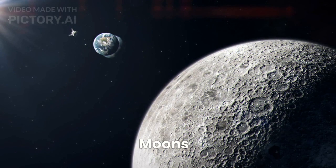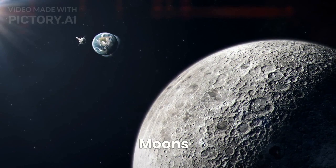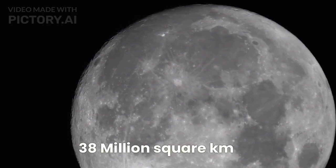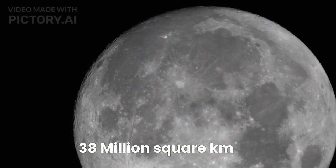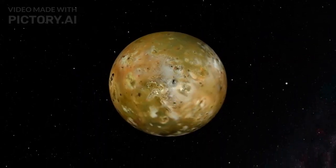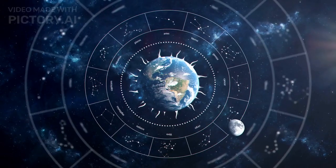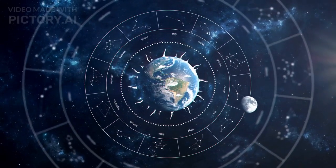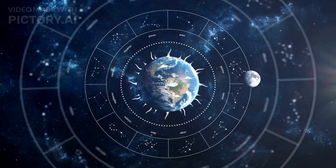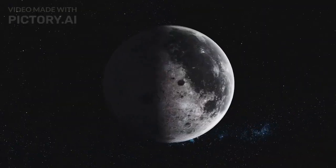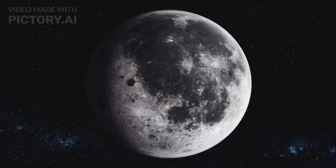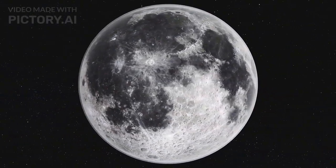Then we have moons, the cosmic companions. The moon's surface area is about 38 million square kilometers. Many planets have moons that orbit them. Some moons are larger than planets, like Ganymede, Jupiter's moon, and Titan, Saturn's moon. These moons play crucial roles in shaping the landscapes and environments of their host planets.